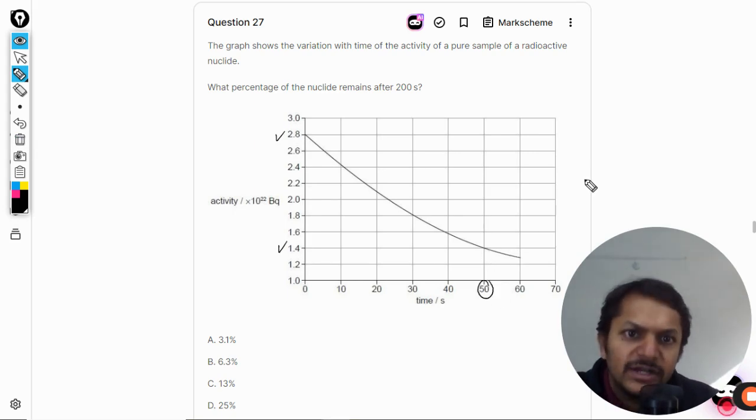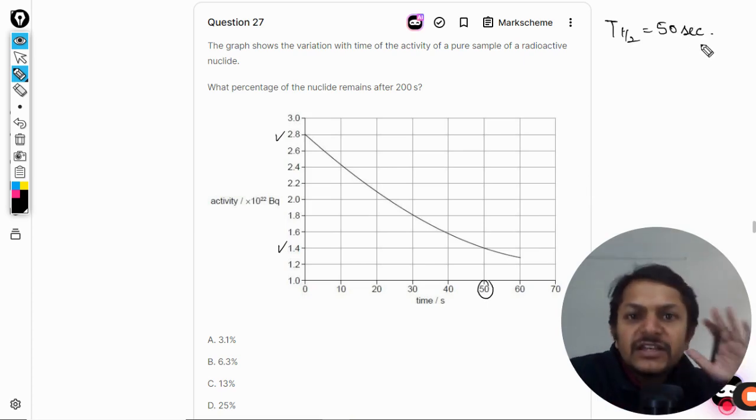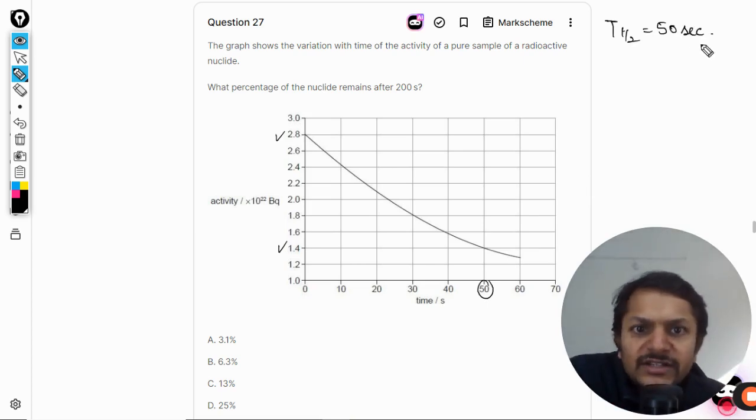So 50 seconds becomes the half-life. So the first thing that we can read from the graph is this. And 200 seconds, it means that four half-lives have been passed. So we are going to apply the formula N equals N naught half raised to power t divided by t half.